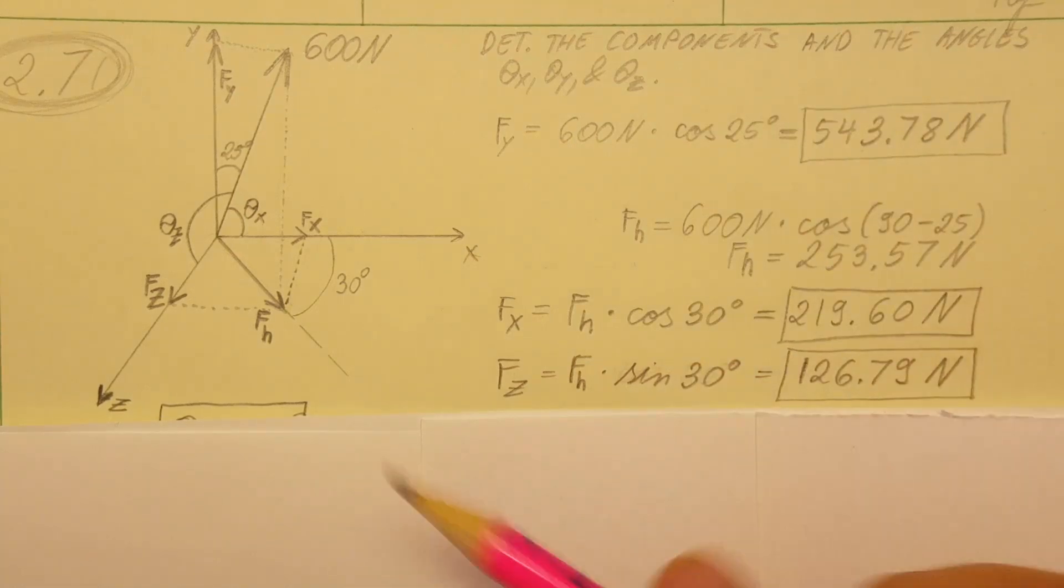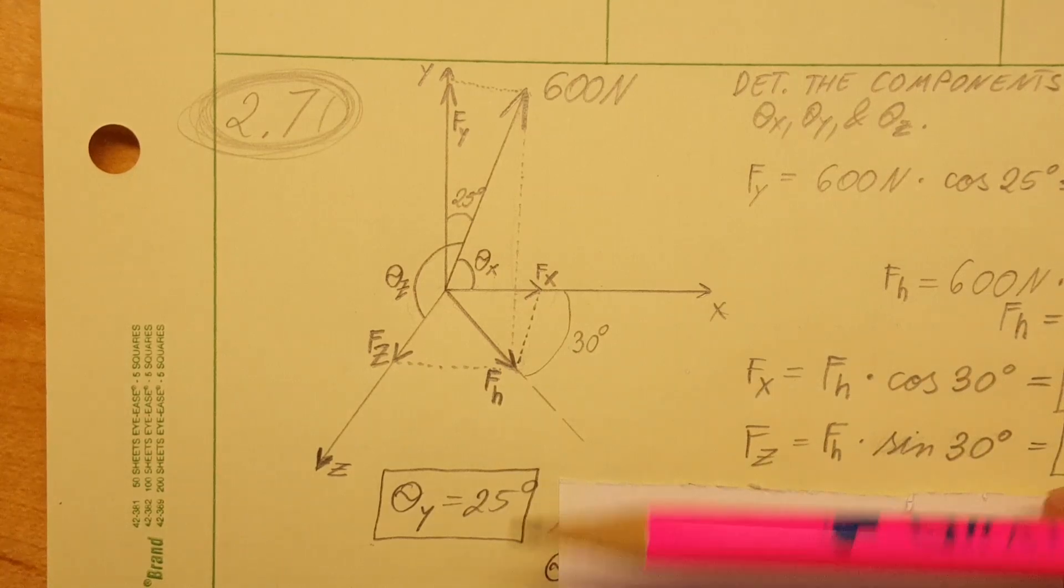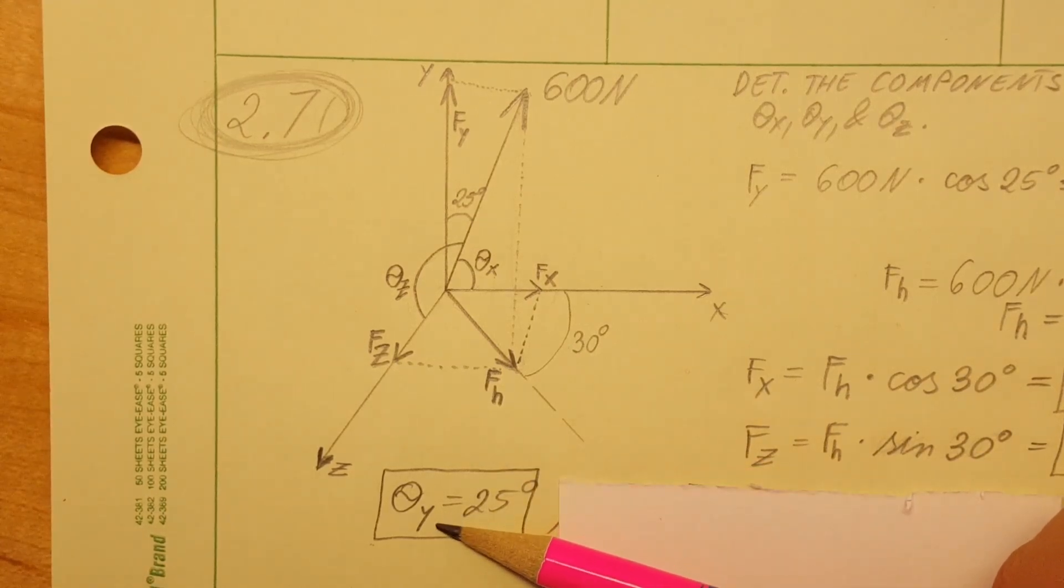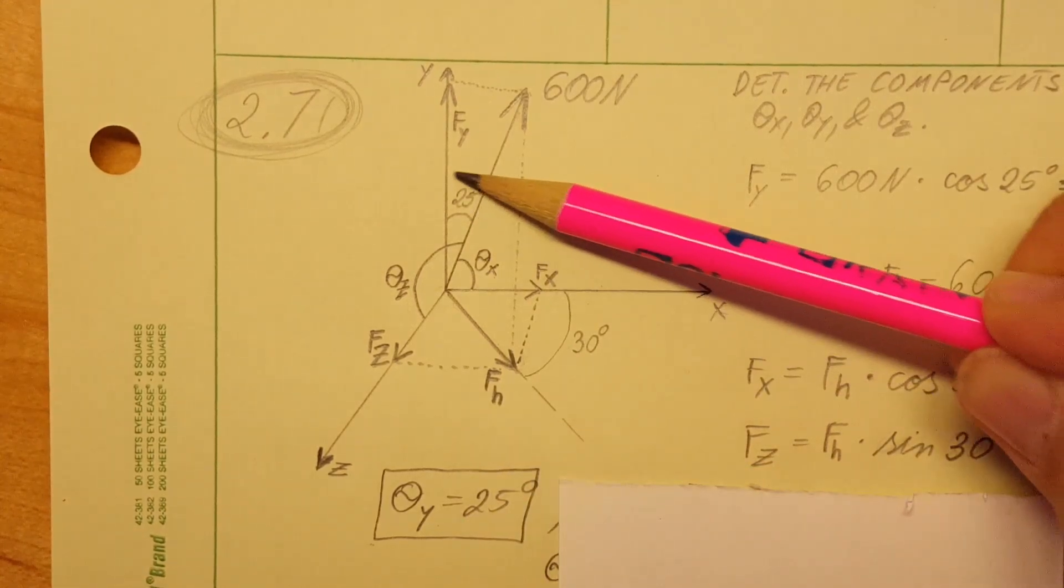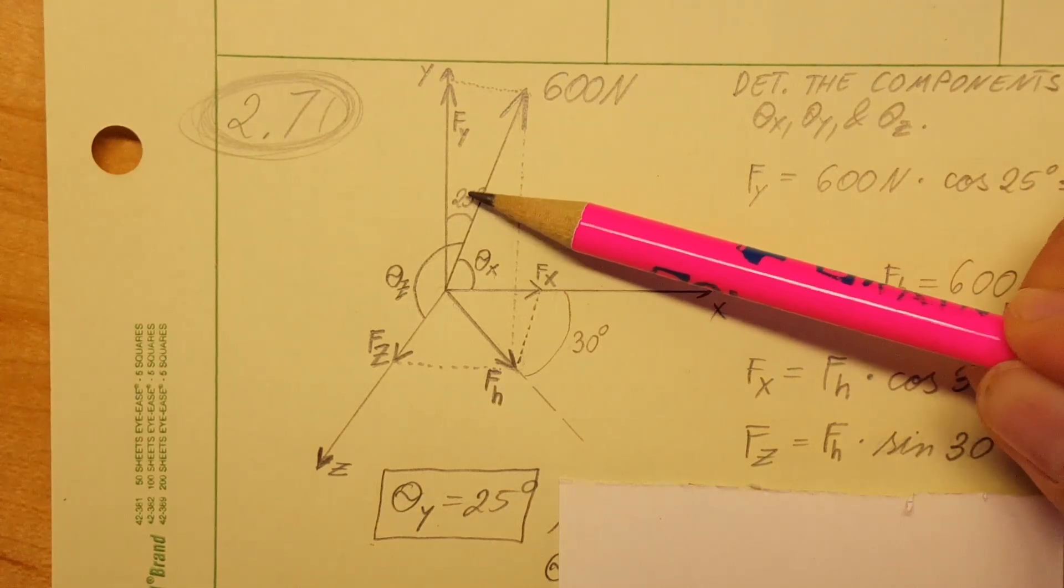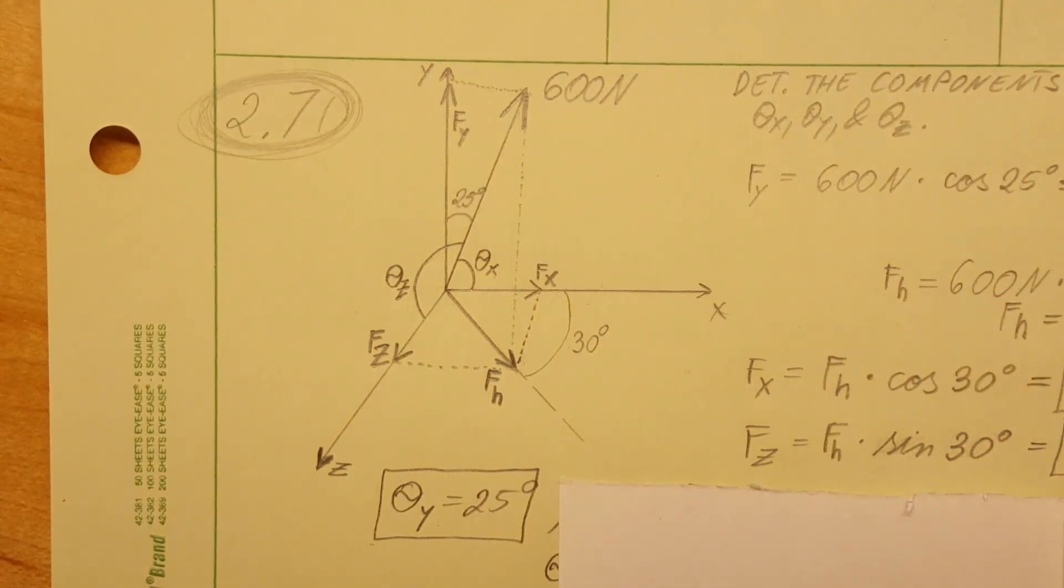Now let's go ahead and find our angles. For the theta with respect to y, theta to the y-axis, it's given so we know it's 25 degrees. There's no calculation needed.